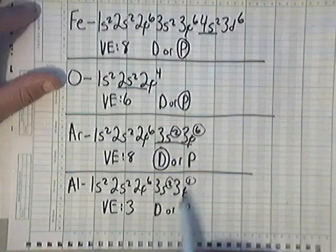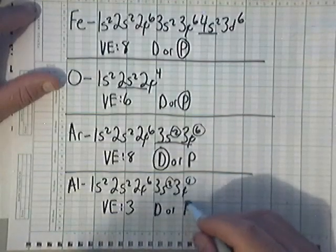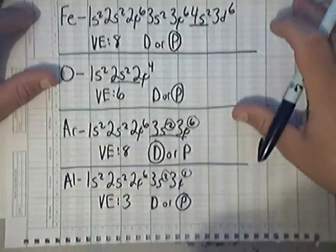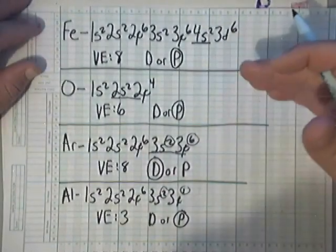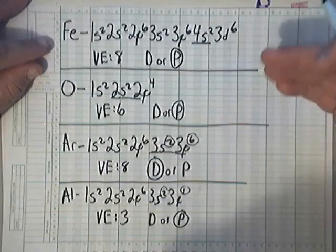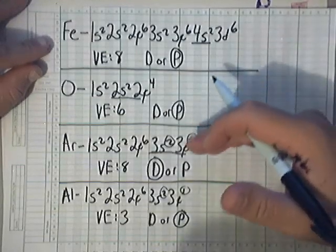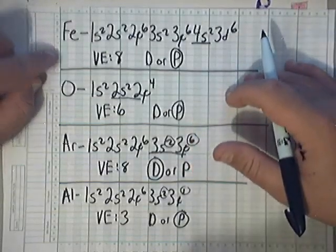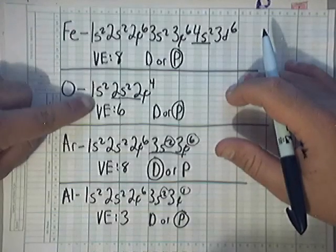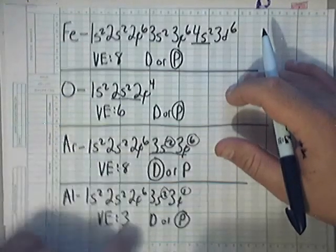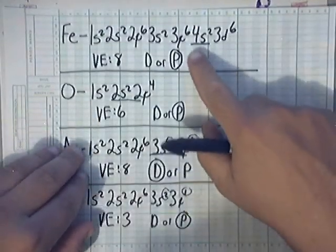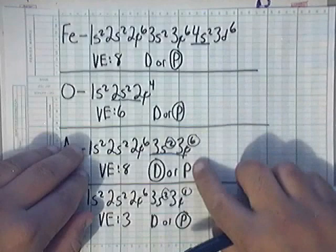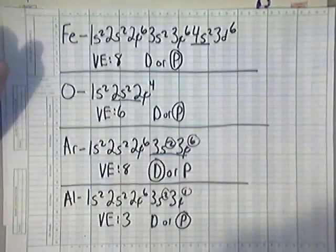Alright guys, I hope this helps as far as getting more experience writing electron configurations, and I hope I explained more clearly the valence electron counts and how to get them looking at the electron configurations, and I hope I cleared up paramagnetic and diamagnetic. Alright guys.